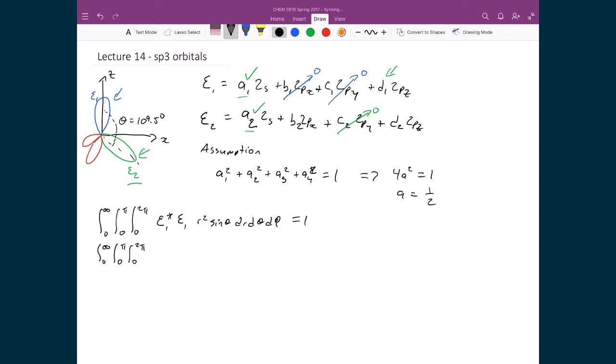Let's explicitly write in ξ1. So we've got 1 half times 2s star plus d1 times 2pz star. And I'm going to have 1 half times 2s plus d1 times 2pz. And that is going to be multiplied by r squared, sin theta, dr, d theta, d phi. And that's equal to 1.